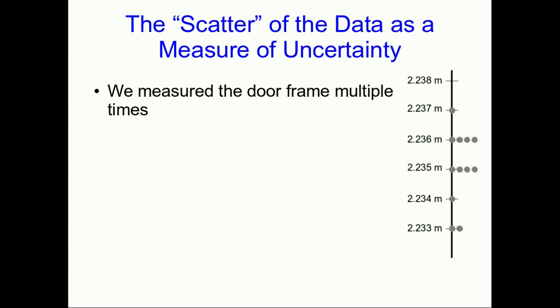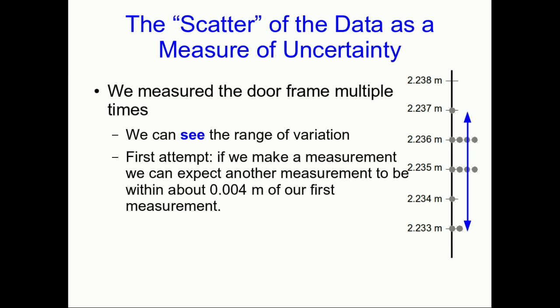So an uncertainty tells us a range of variation so that if we repeat the measurement we expect to see values lying within that range. We can see something about the range of variation because we've taken multiple measurements and so we can see directly that there is a range of variation. So a first attempt at answering what's our expected range of variation is just directly from that data. If we make a measurement we can expect another measurement to be within about 4 millimeters of our first one. But that's our maximum range of variation. It looks like it's pretty rare for two measurements to disagree by that much. And what we're more interested in is what's the typical range of variation.